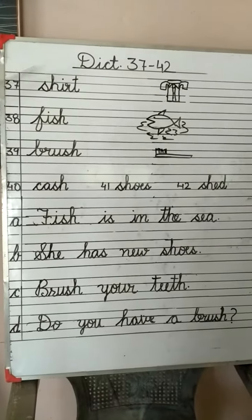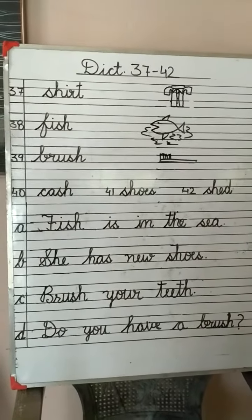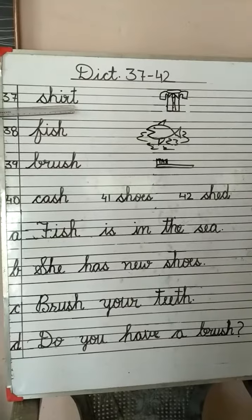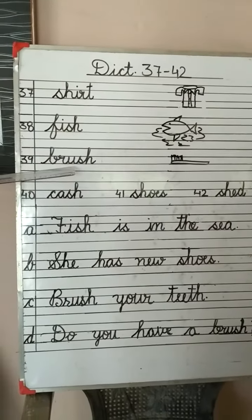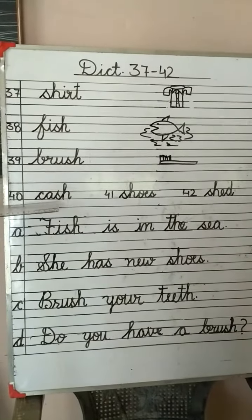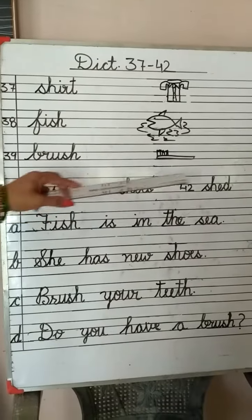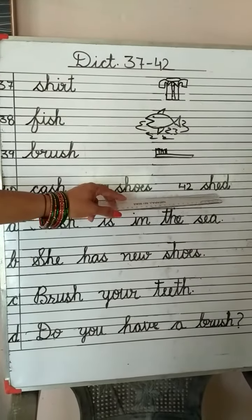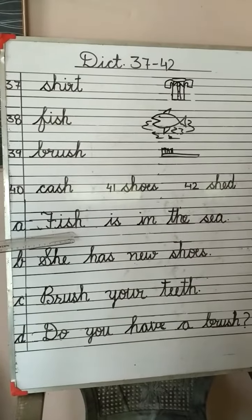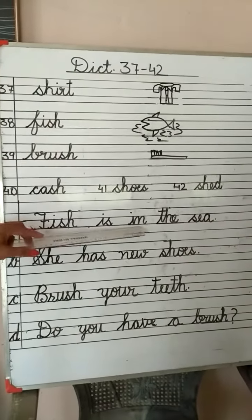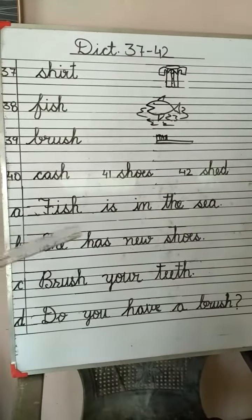Good morning students. Let's revise these words having 'sh' sound. S-H-I-R-T Shirt, F-I-S-H Fish, B-R-U-S-H Brush, C-A-S-H Cash, S-H-O-E-S Shoes, S-H-A-D Shed. Now come to the sentences. F-I-S-H Fish, is in the S-E-A Sea — 'sea' means 'samandar'. Fish